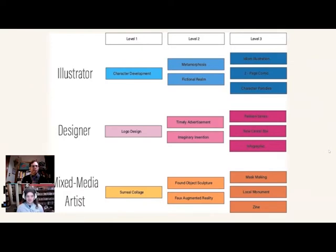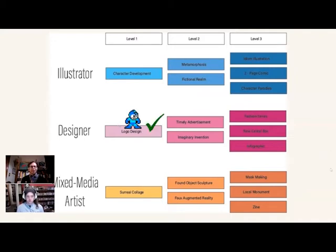Let's say they chose designer — they'll start on level one, which is the logo design unit. There will be activities to do and a larger, finished, polished artwork to complete. Once they beat — or complete — that level, they've got choices: they can go to either of the level two units, or if logo design wasn't as exciting they can switch paths.